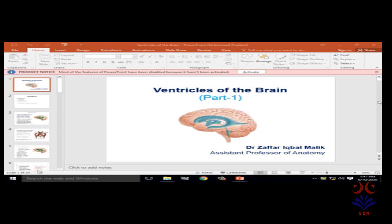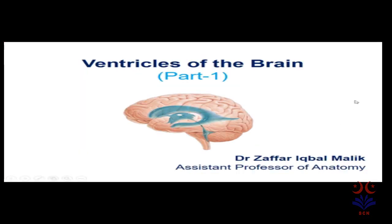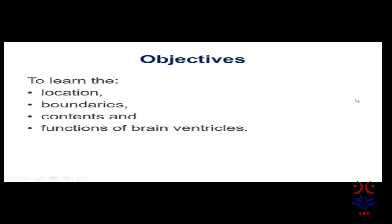Bismillahir Rahmanir Raheem. Today we will discuss the ventricles of the brain. In part 1 we discuss lateral ventricles and third ventricles. The objectives are to learn the location, boundaries, contents and functions of the brain ventricles.